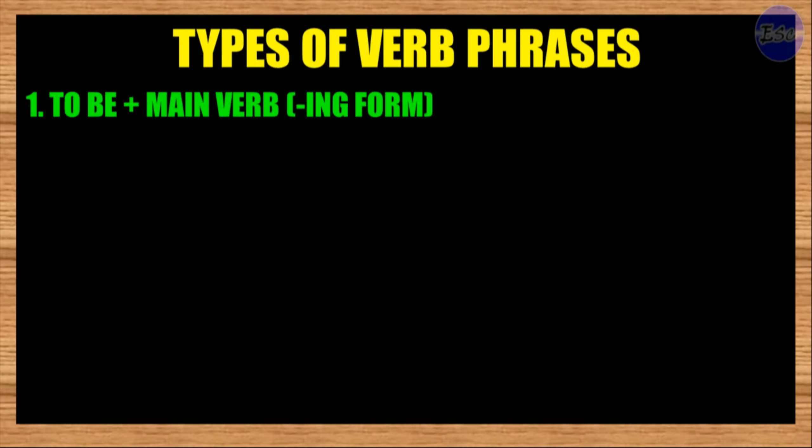1. To be plus main verb in ING form. When the main verb is being used in its ING form, example, walking, talking, it expresses a continuous aspect. The use of auxiliary verbs will show whether the continuing action is in the past, present, or future.